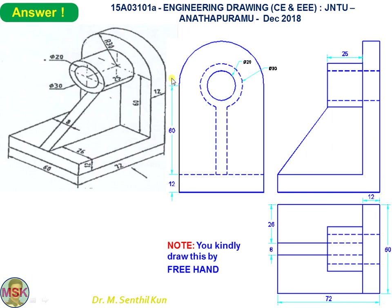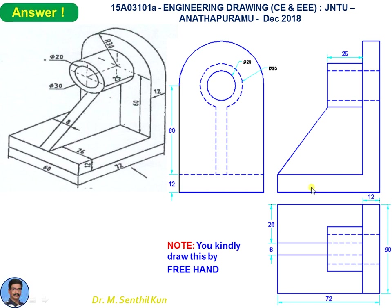This is self-explanatory. Please pause the video and compare the answer with the question. One important note: you are asked to draw freehand, but I have drawn the three orthographic views — front view, top view, and right side view — using scale and compass. You must draw the entire thing by freehand proportionately.